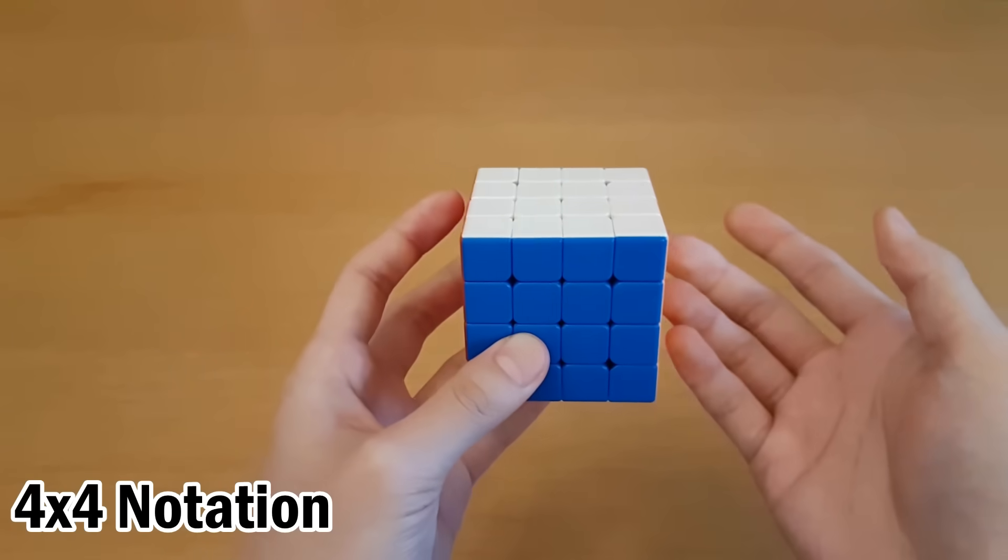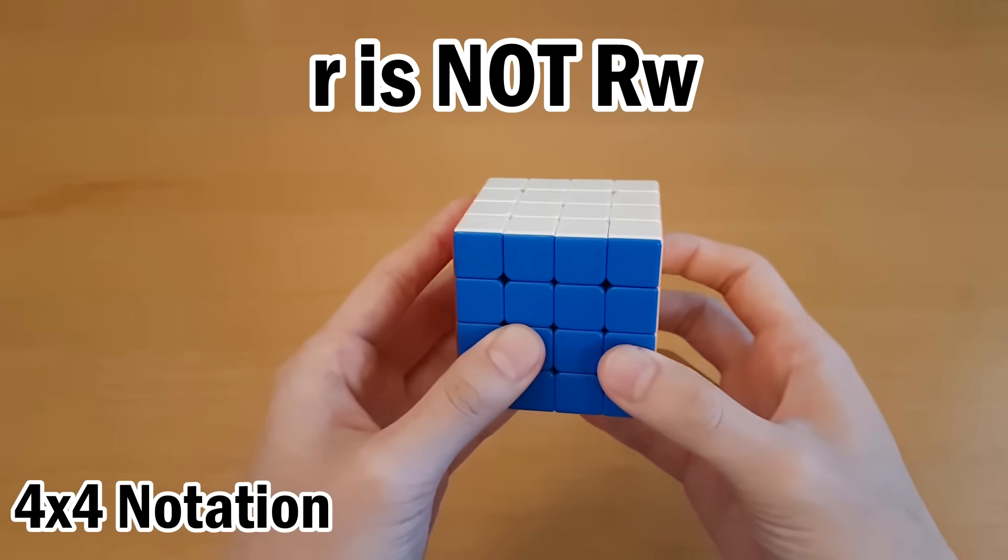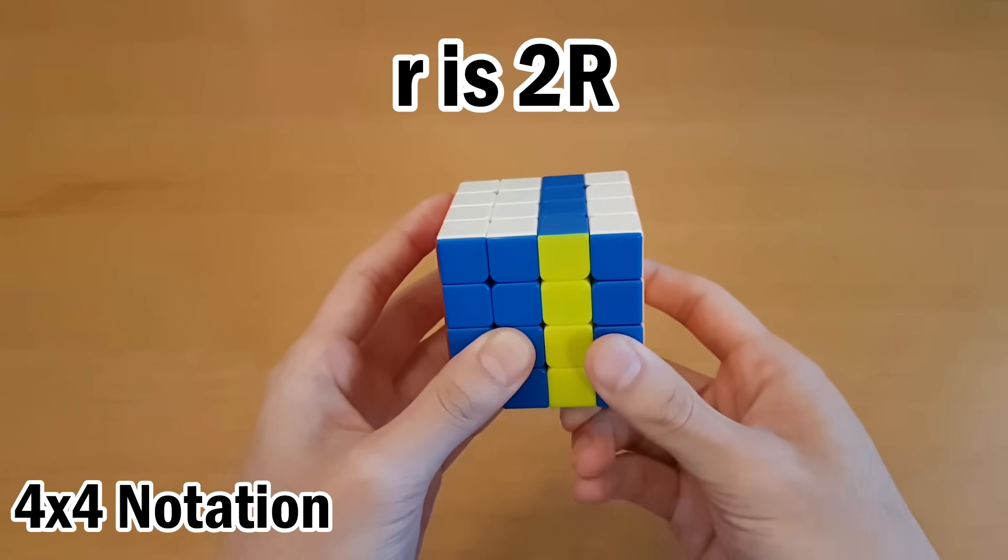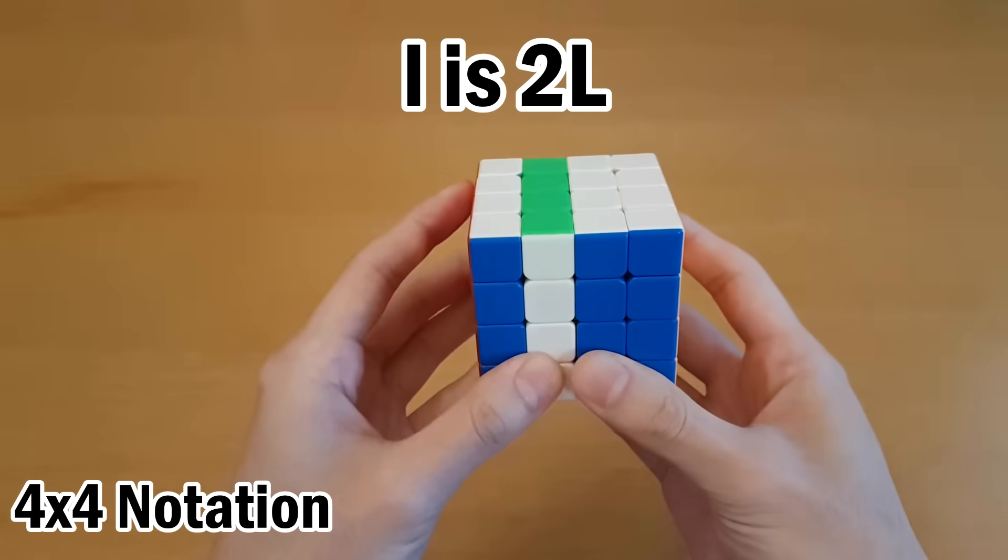And lastly, there is 4x4 specific notation. If you see lowercase letters, they no longer mean wide moves. What they mean instead is slice moves, being like this. So r is just this layer, l would be this layer, and so on.